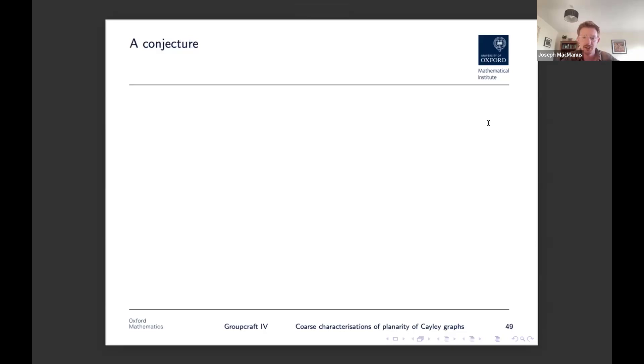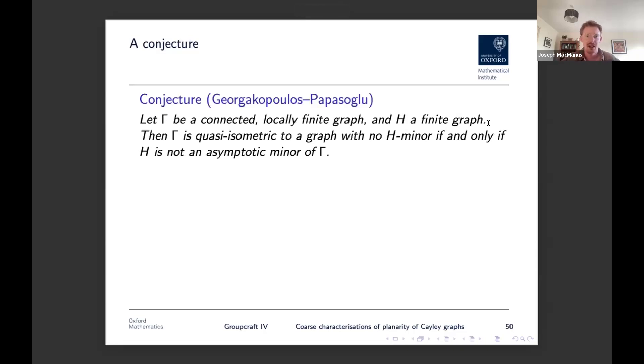So there was a conjecture of Georgakopoulos and Papasoglu that says that if you have a connected, let's say locally finite graph, a finite gamma and a finite graph H, then gamma is QI to some graph which has no H minor on the nose if and only if H is not an asymptotic minor of gamma. So somehow the conjecture is that these fat minors, these asymptotic minors, essentially correspond to quasi-isometries to graphs with no minors on the nose. And this would be a really nice thing to be true because if this was true, then you can essentially use it to lift the entire theory of graph minors to the coarse setting and start to study and basically get all of the results for free for fat minors, because it turns out they're basically the same thing.